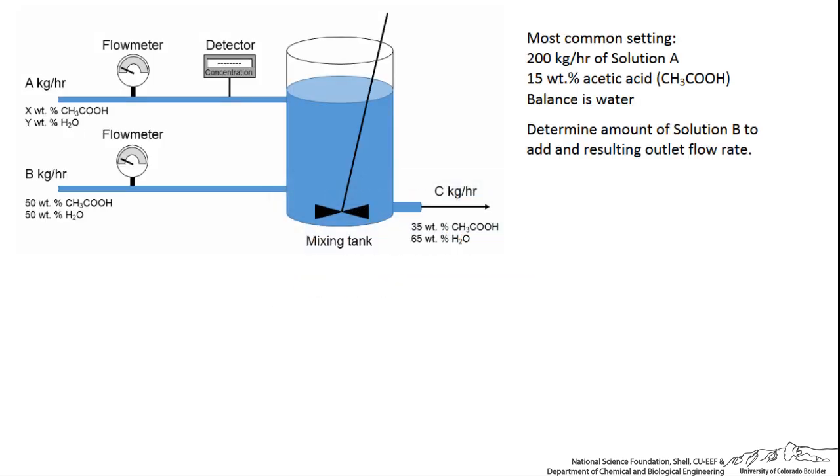Once we have a material balance problem let's start with our general equation. Whatever goes into our mixer minus whatever comes out plus anything that is generated or consumed, and we subtract out what is consumed since we are losing it, equals the accumulation within this mixer.